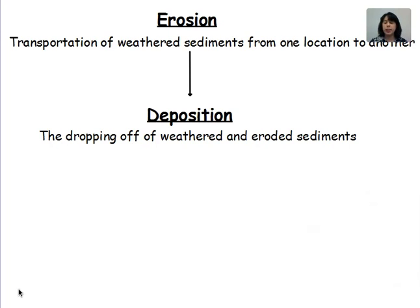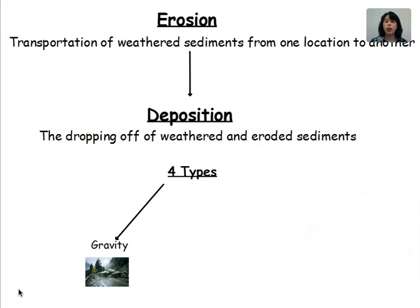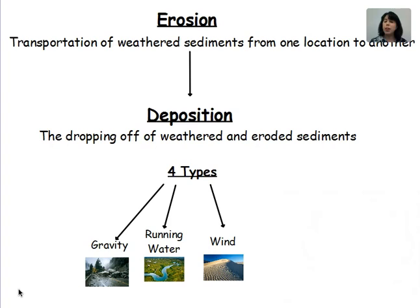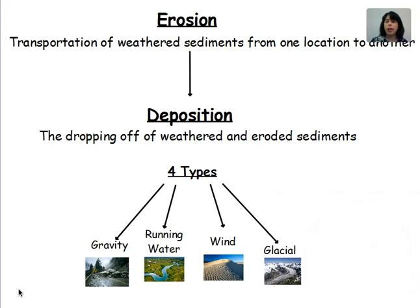As we discussed in class, there are four unique agents of erosion: gravity, running water, wind, and glacial erosion — also known as moving ice. This video, we're going to focus on running water.